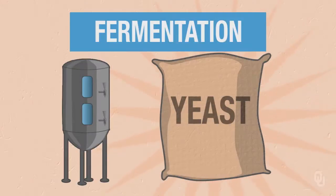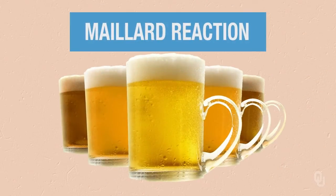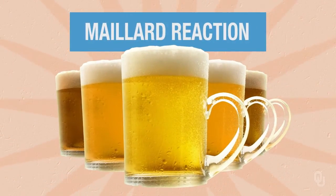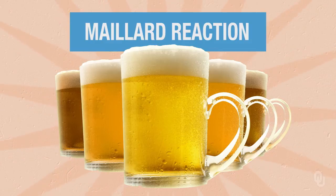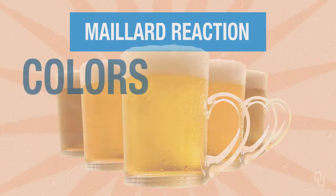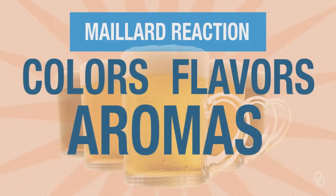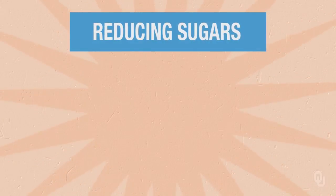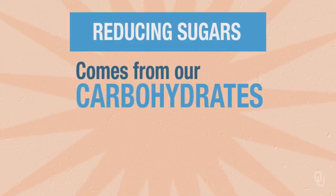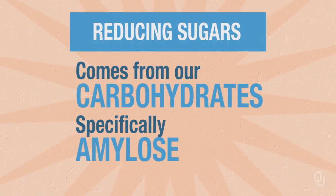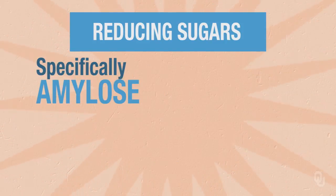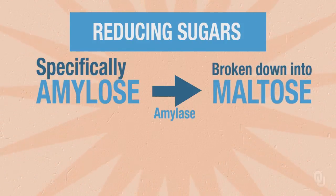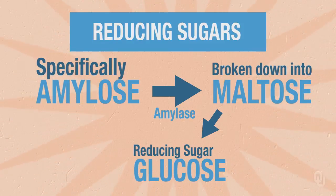Most of the amino acids will be used for nutrition for the yeast during the fermentation process. But some of these go into the Maillard reaction to produce the complex colors, flavors, and aromas. As for reducing sugars, these come from our carbohydrates — our amylose. The amylose is broken down into maltose and glucose, and glucose is a reducing sugar.